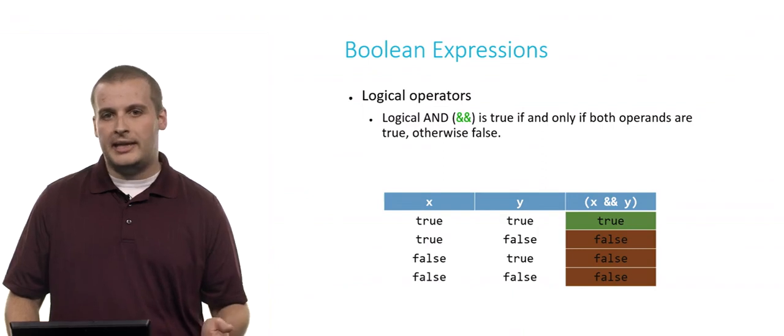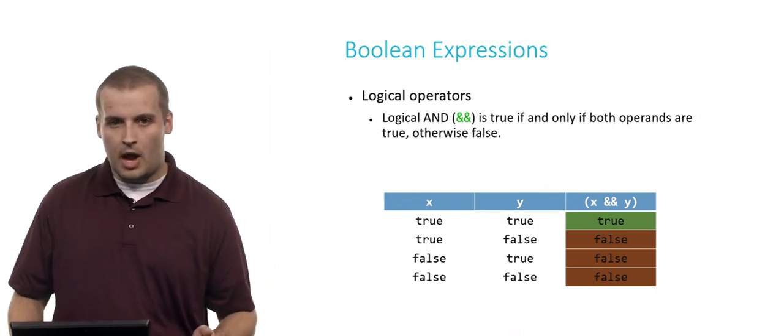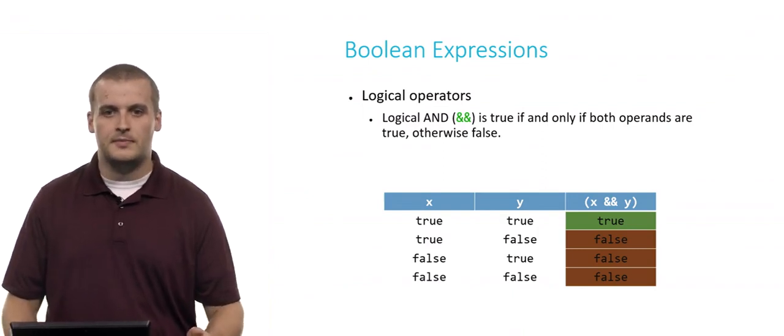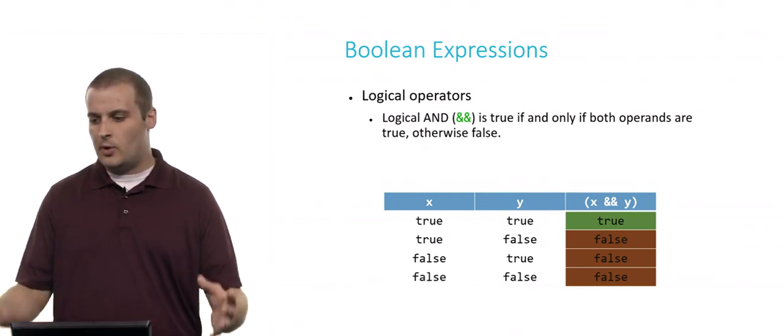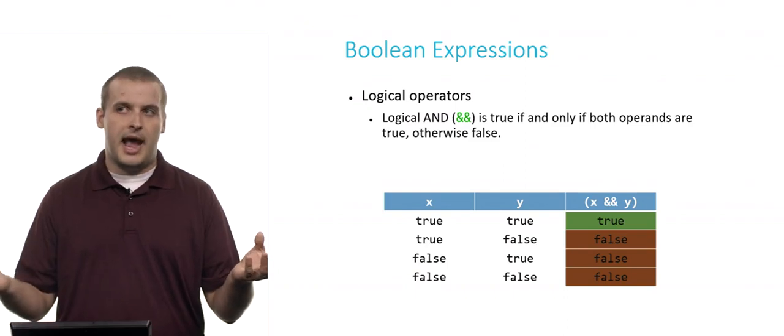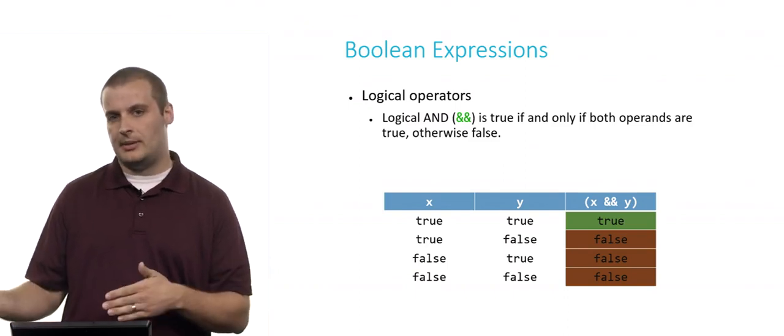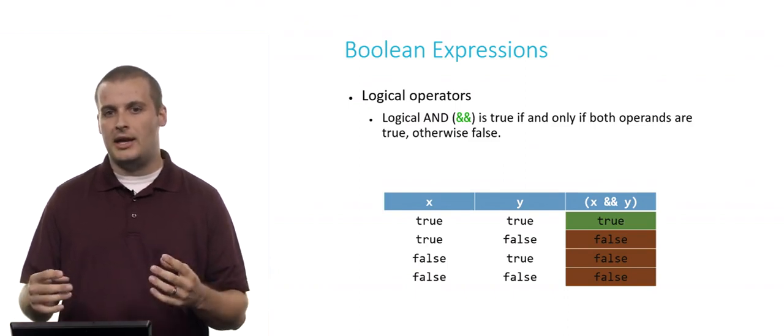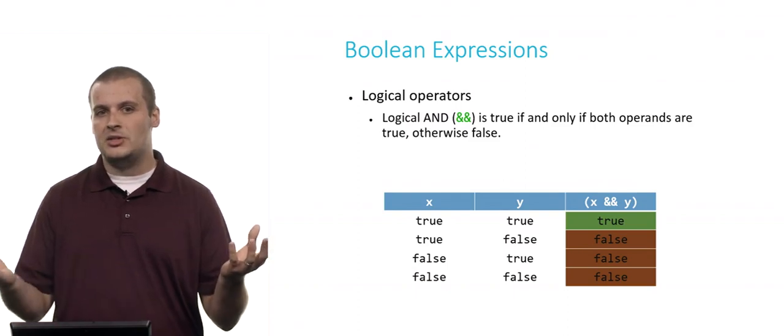So let's take a look at the three logical operators that we'll see quite a bit in programming in CS50 and programming more generally. Logical and is true if and only if both operands are true, otherwise false. What does that mean? Let's say that I am at a point in my code where I have two variables, x and y. And I want to decide whether to do something in my code based on if x is true and y is true. I only want to do it if both of them are true. Otherwise, I don't want to go down that path.